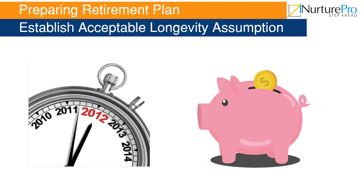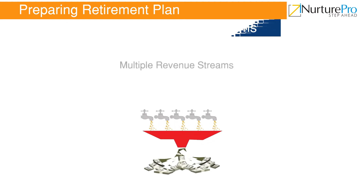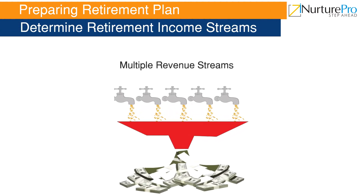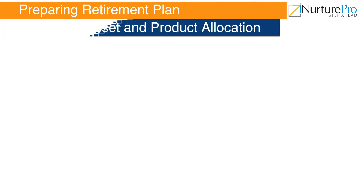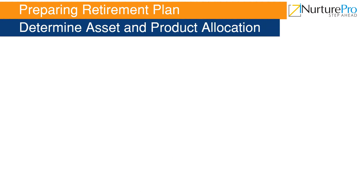Next, let's see from where an individual can get money for retirement. An individual should identify the options from where he can get money before and after retirement. It could be his job, fixed deposits, investments, or assets which are an income source for the individual.